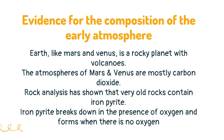Evidence for the composition of the early atmosphere comes from earth-like Mars and Venus, which is a rocky planet with volcanoes. The atmospheres of Mars and Venus are mostly carbon dioxide. Rock analysis has shown that very old rocks contain iron pyrite. Iron pyrite breaks down in the presence of oxygen and forms when there is no oxygen.